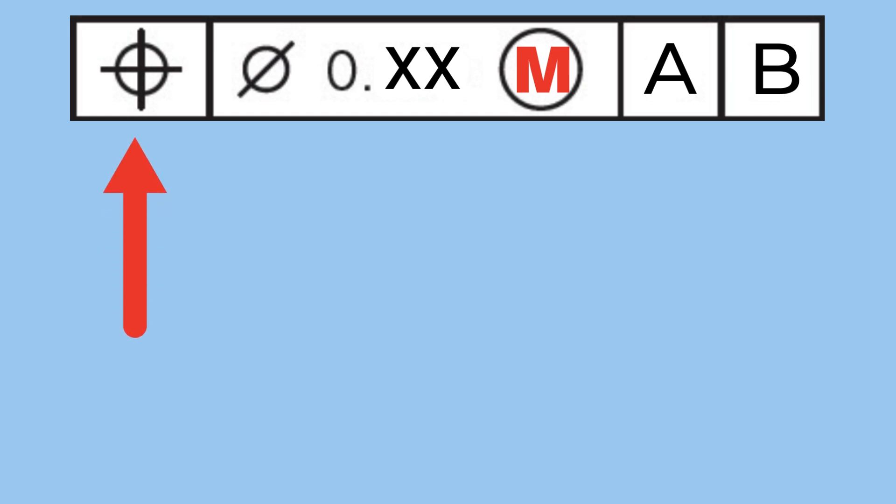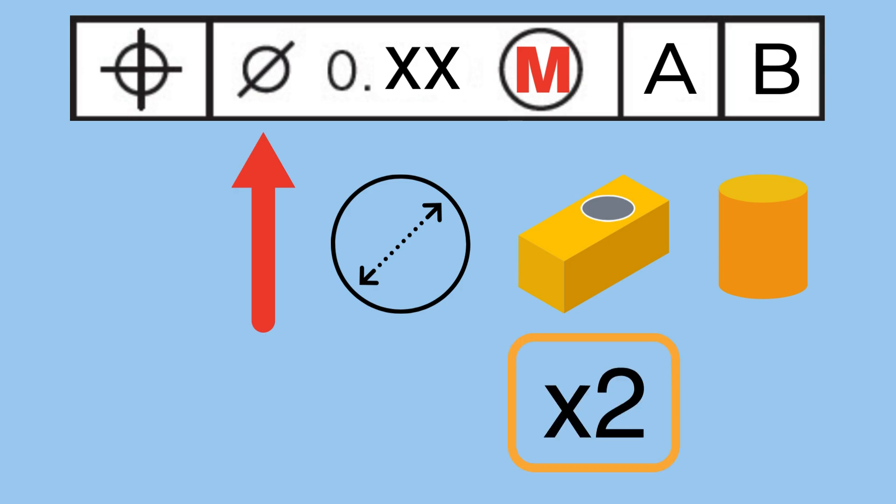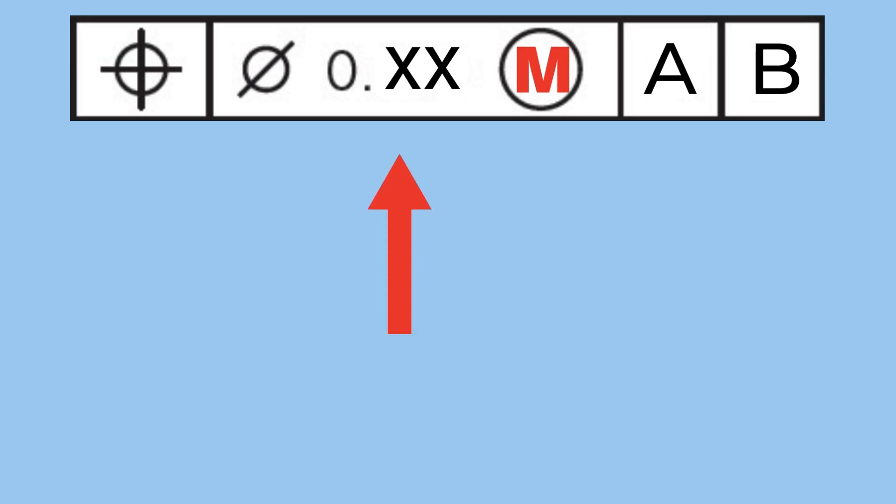The position symbol indicates that all the subsequent symbols and numbers correspond to a position tolerance. The diameter symbol is not mandatory. If present, it indicates that the feature and tolerance are diametrical. Since the position tolerance is most often used on holes and shafts, you will usually see it. In such a case, the position deviation is multiplied by 2.